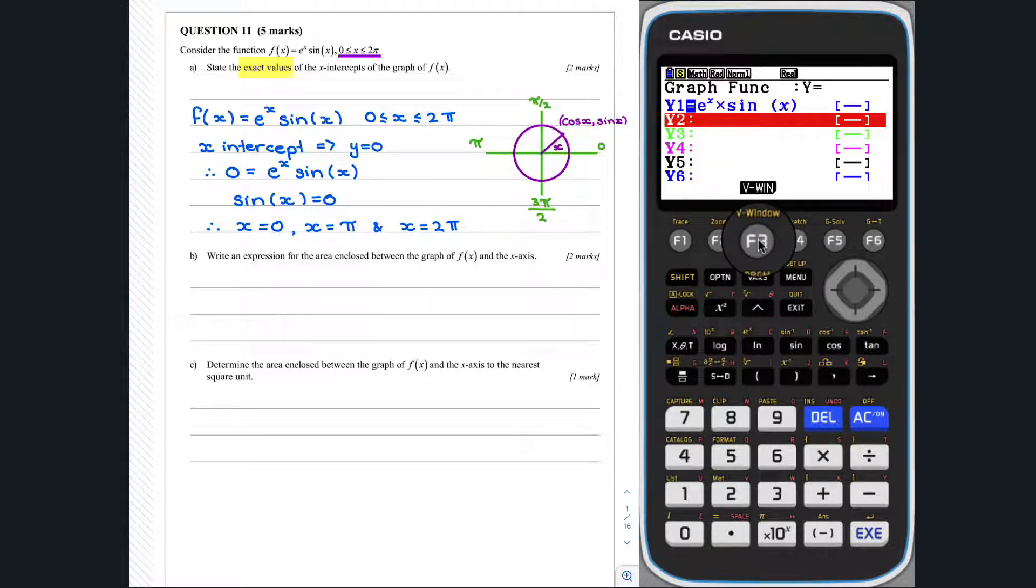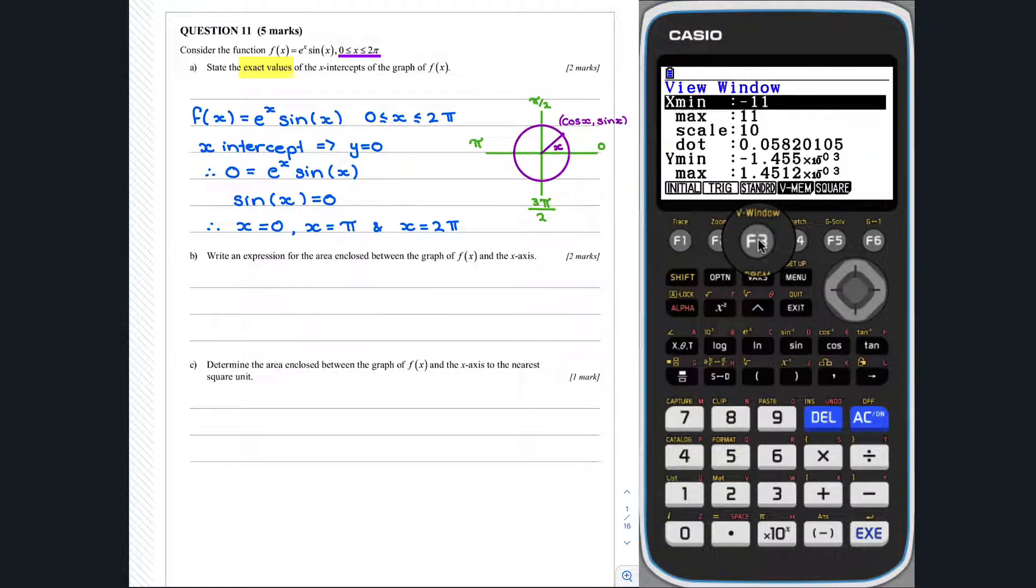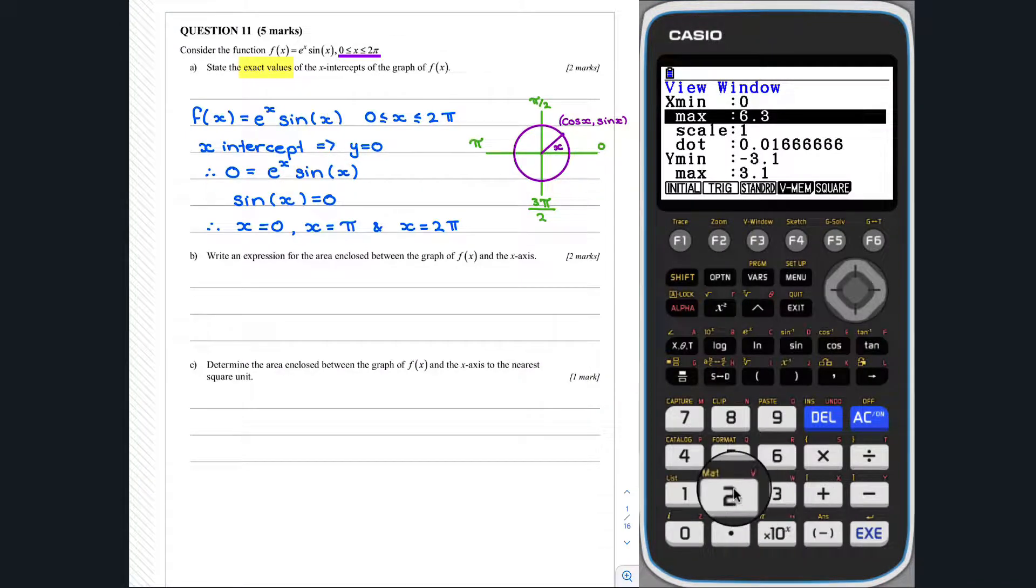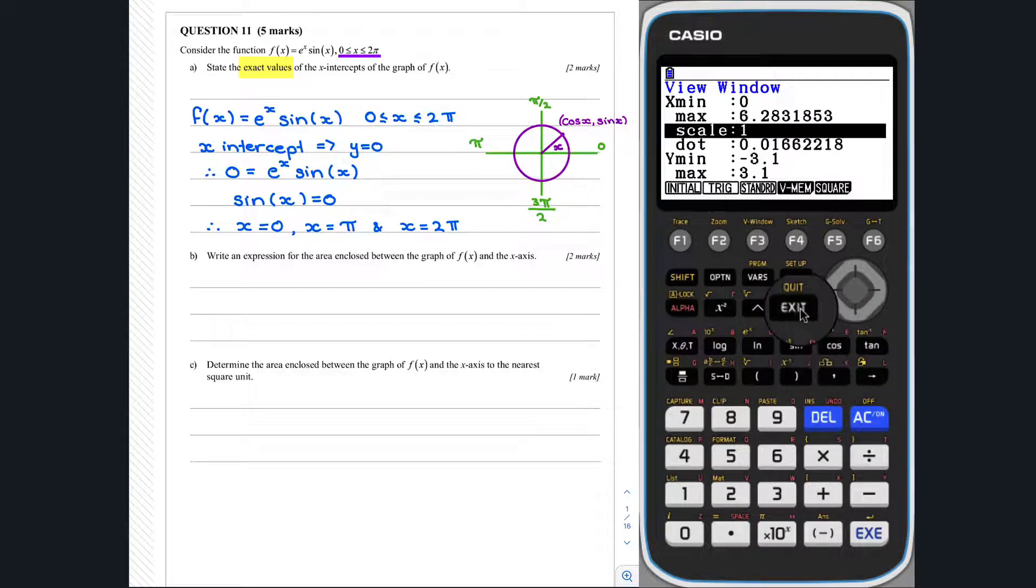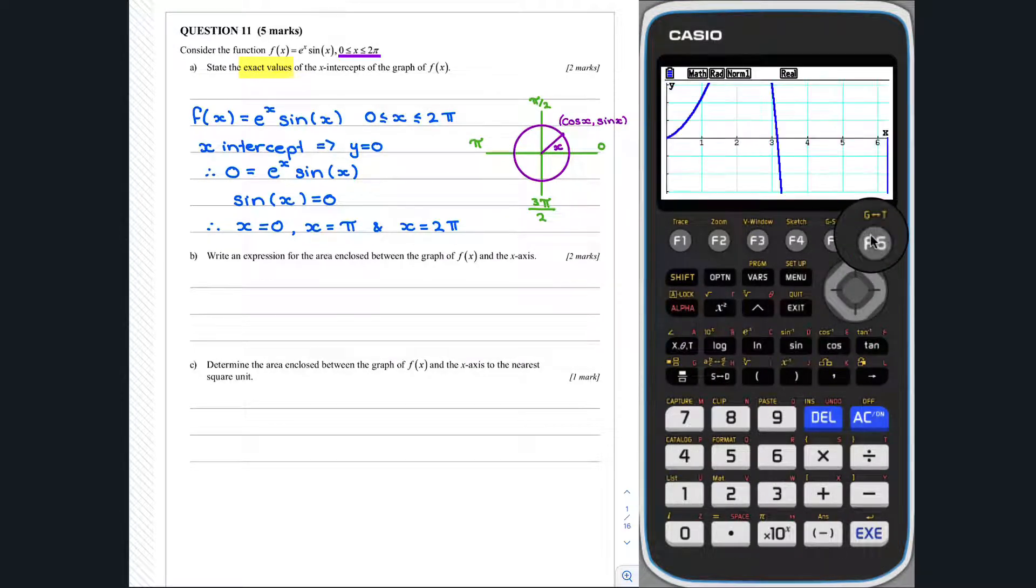We now need to set up our view window, so let's start with the initial view window. This question tells us the domain of f of x, so we can use this to enter in our xmin and our xmax. We can try and get a slightly better view of this by using zoom auto.